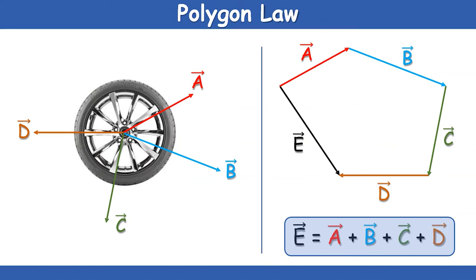Similarly, the polygon law is connected to two or more vectors. Suppose you want to add vectors A, B, C, and D. If they are represented both in magnitude and direction by the sides of a polygon — vector A, vector B, vector C, vector D — then the closing side of the polygon in the reverse order gives the resultant. So vector E equals vector A plus vector B plus vector C plus vector D.